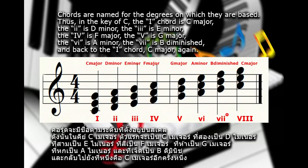Chords are named for the degrees on which they are based. Thus, in the key of C major scale, the first chord is C major, the second is D minor, the third is E minor, the fourth is F major, the fifth is G major, the sixth is A minor, the seventh is B diminished, and back to the first chord, C major, again.